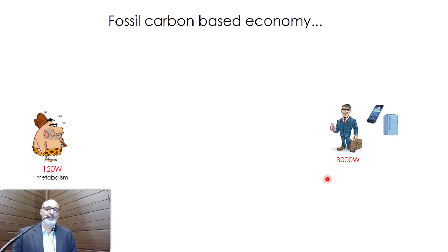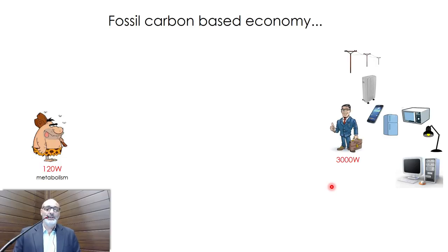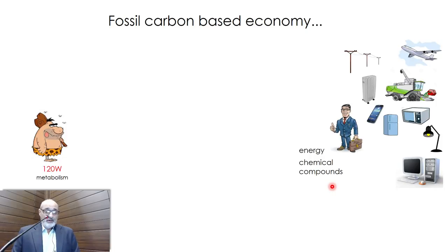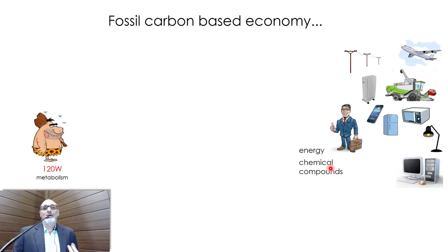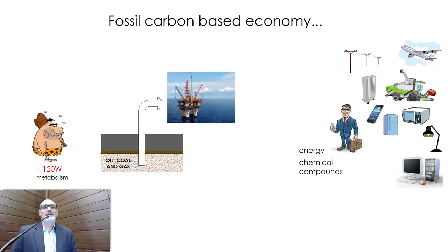We need cell phones, refrigerators, microwaves, illumination — public illumination is a very disruptive technology in our society — computers, heating, air conditioning, transportation, agricultural machines, energy to plow and harvest. We need energy carriers and chemical compounds. And today we are taking both from the underground: oil, coal, and gas. We pump these substances from the underground and transform them into energy carriers and chemical compounds in an industrial conversion unit.